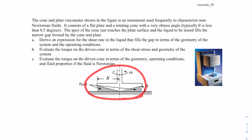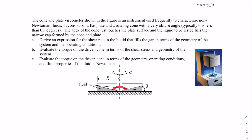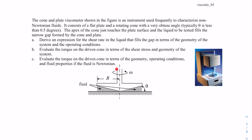The construction is simple, as you can see in this figure. There is a plate in the shape of a cone, and this angle is usually obtuse. The angle that the slanted side of the plate makes with the horizontal, theta, is very small — typically 0.5 degrees. We put the fluid in between the horizontal surface and the plate and rotate the plate with a fixed angular velocity, then measure the torque acting on the plate.